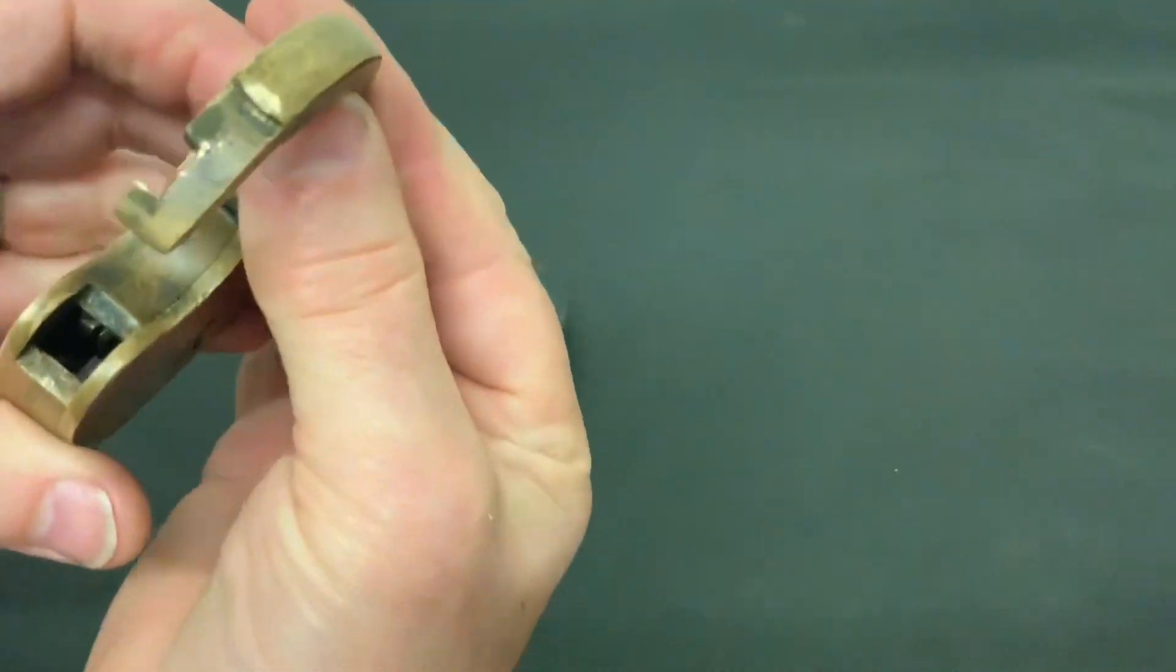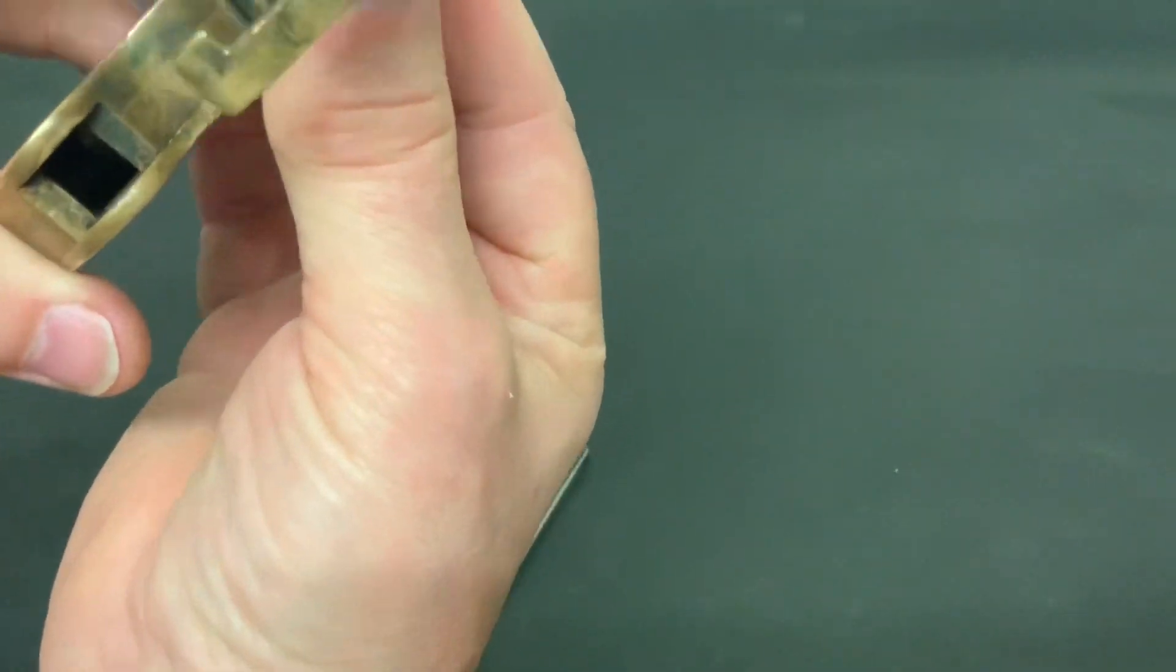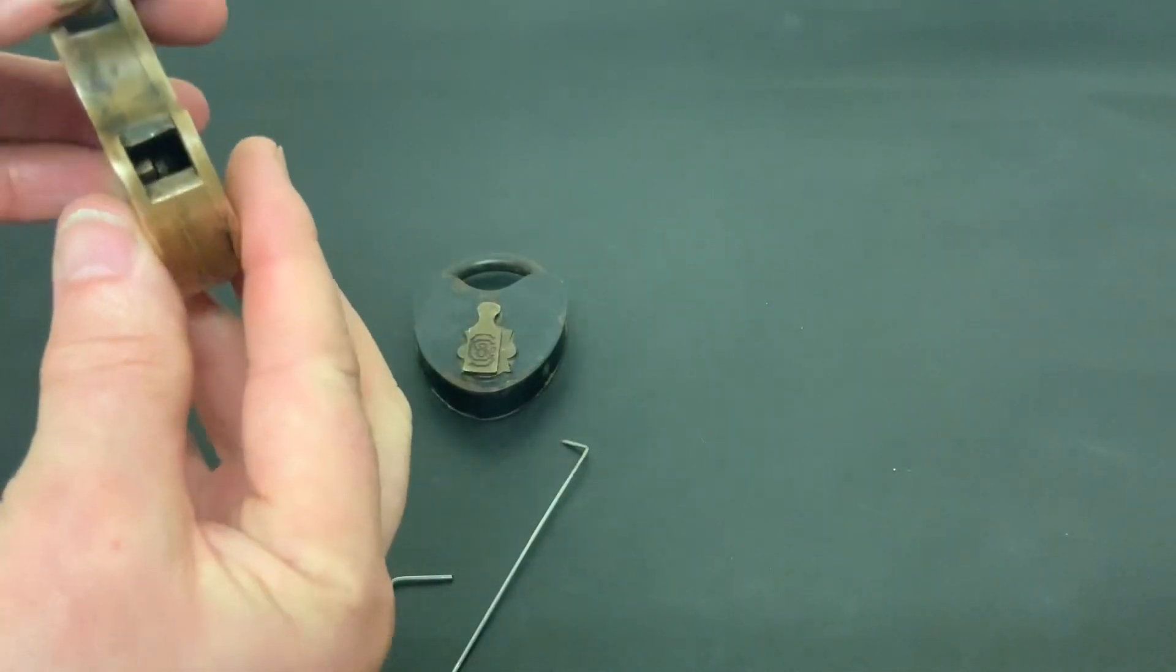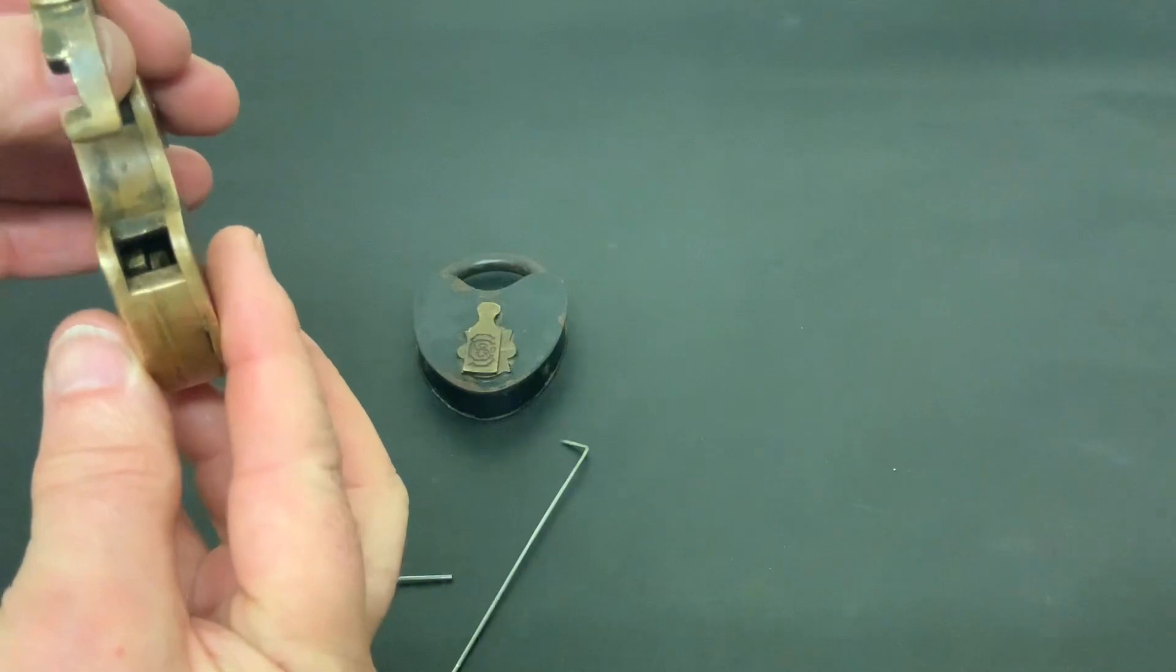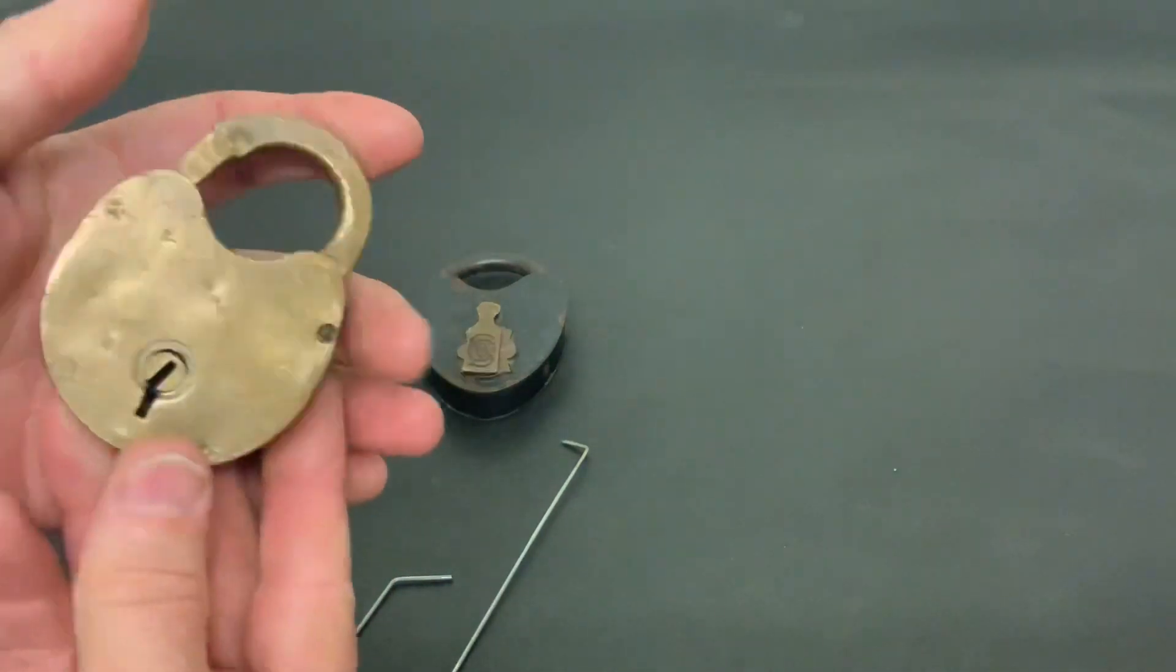So have you seen inside there? There's only two levers. Now you can see. Yeah it's just the two levers. There's nothing to it really. But yeah it's a lovely old lock.